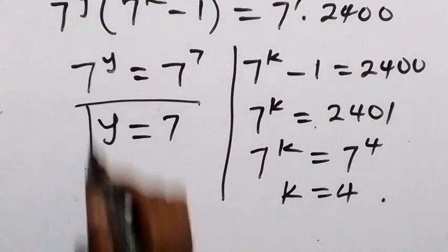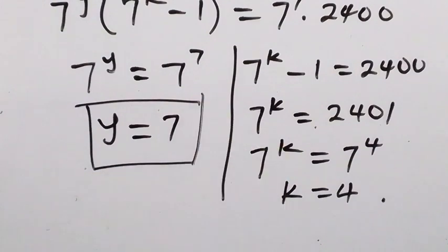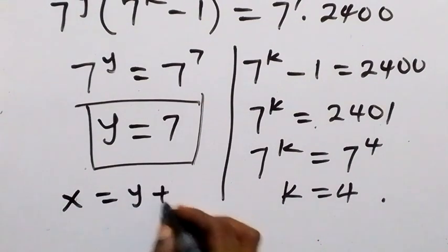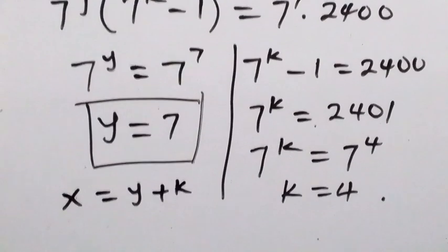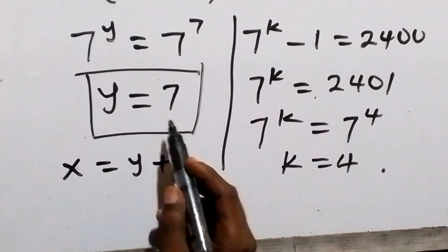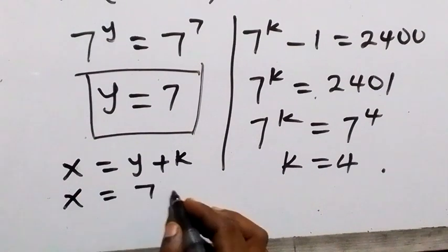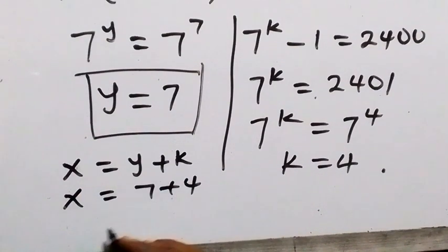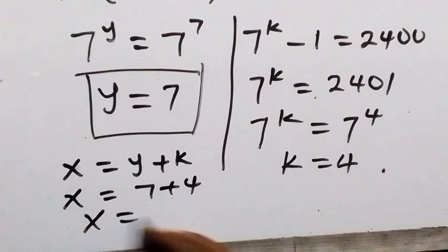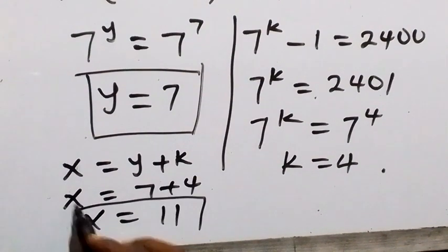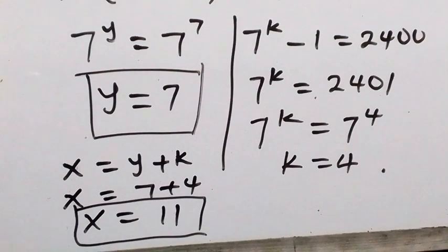From the equation x equals y plus k, we substitute the values: x equals 7 plus 4, so x equals 11. Therefore, the value of x is 11 and the value of y is 7.